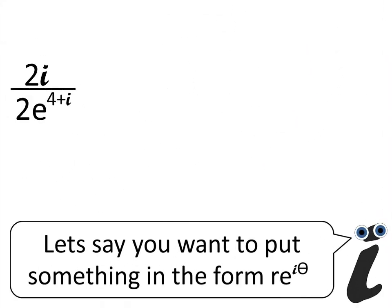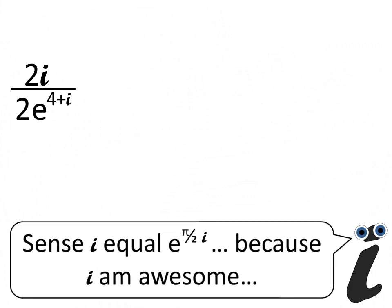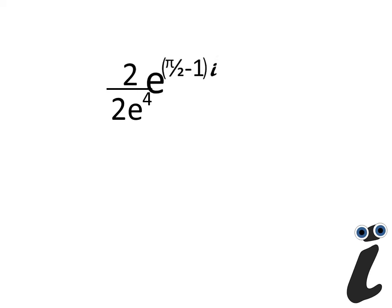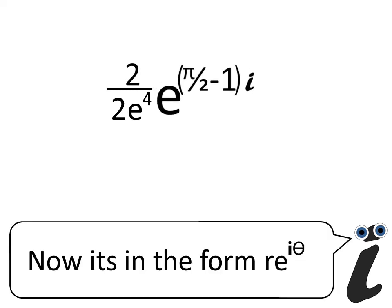Let's say you want to put something in the form r e to the i theta, since i equals e to the pi halves i, because i am awesome. And now it's in the form r e to the i theta.